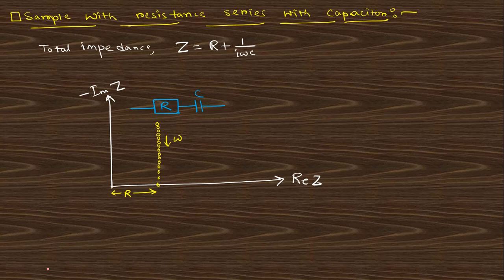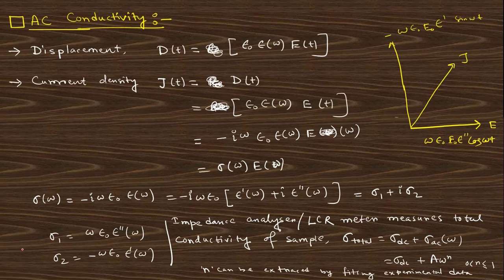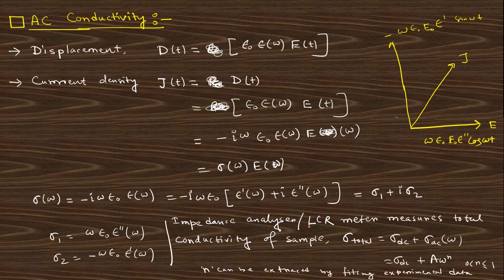The relaxation time can be calculated from an LCR meter or impedance analyzer. For the RC series configuration the graph takes a specific shape. Regarding AC conductivity: since the dielectric constant is complex, the conductivity is also complex. The exponent n is calculated by fitting experimental data. The DC part and the AC part both depend on the angular frequency, so conductivity also depends on frequency for dielectric materials. The value of n is obtained by fitting experimental data from the LCR meter or impedance analyzer.